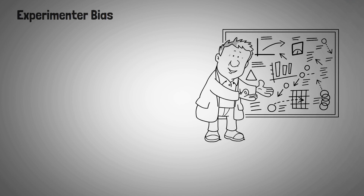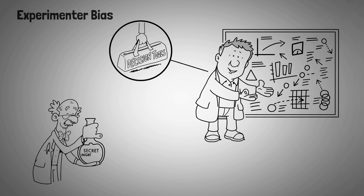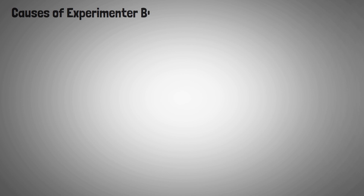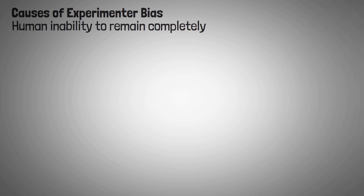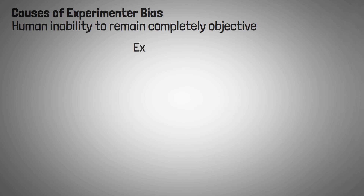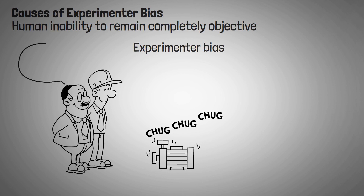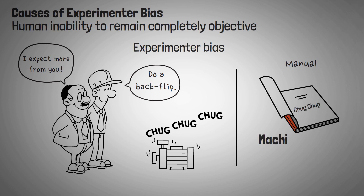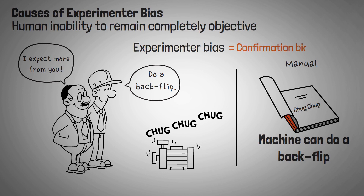Experimenter bias occurs when a researcher either intentionally or unintentionally affects data, participants, or results in an experiment. One of the main causes of experimenter bias is the human inability to remain completely objective. Biases like the confirmation bias and hindsight bias affect our judgment every day. People conducting research may lean toward their original expectations about a hypothesis without necessarily being aware of making an error or treating participants differently. These expectations can influence the ways in which studies are structured, conducted, and interpreted, making results flawed or irrelevant. In a way, this is a more specific case of confirmation bias.